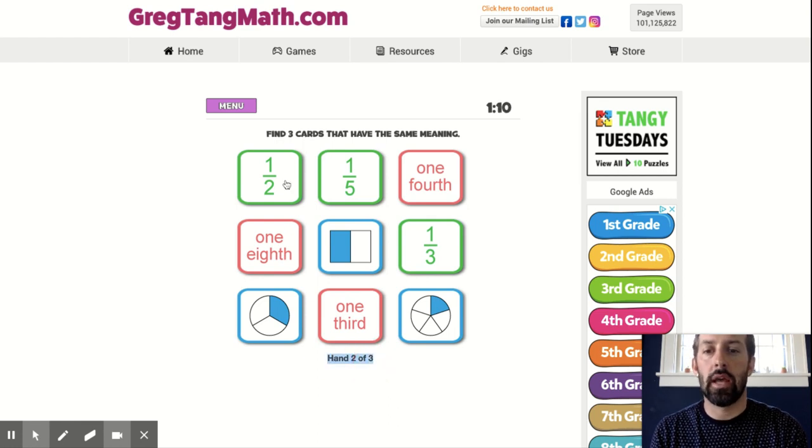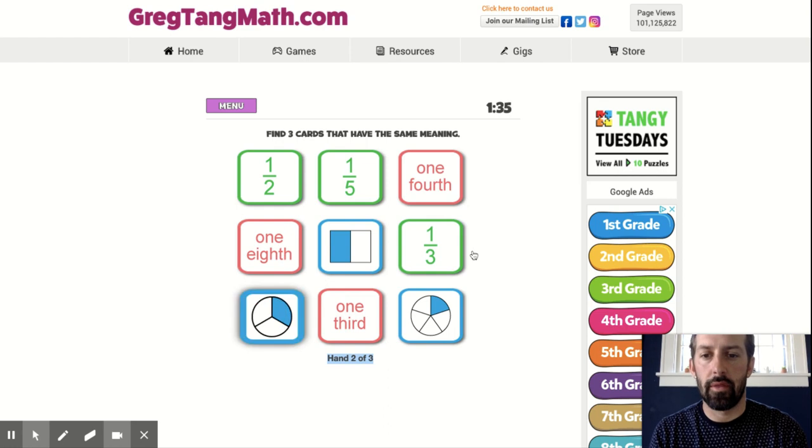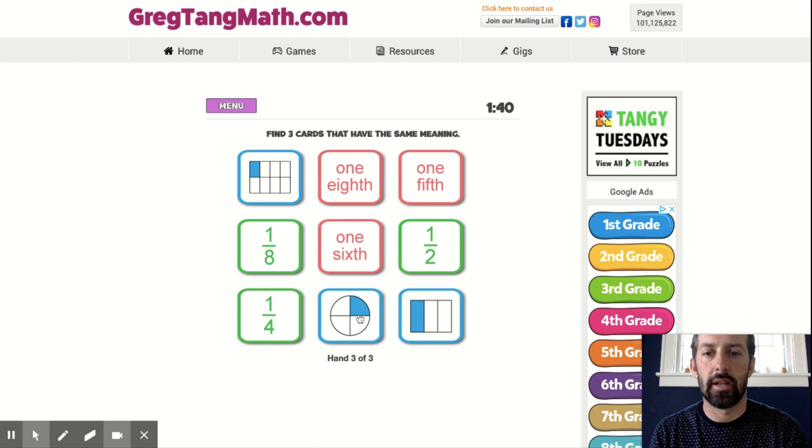So again, I start with the picture. One out of two, one half. Then I look for the fraction one half. And do I have the words? One eighth, one third, one fourth. That can't be it. Let's try another one. One out of three, one third. One third, one third. Let's see, one third picture, one third fraction, one third words. Nice.